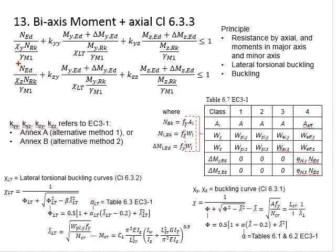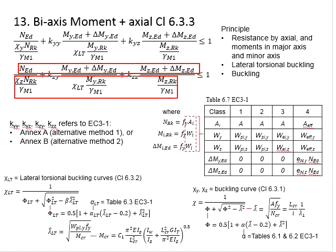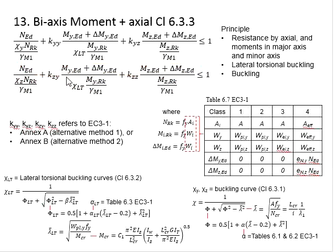Same goes to the second equation. The upper part is for the load, the lower part is for the resistance. The buckling resistance is referring to the axial load, while the lateral torsional buckling is referring to the major axis bending.